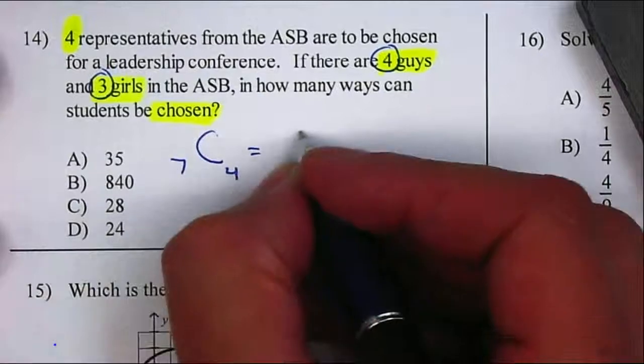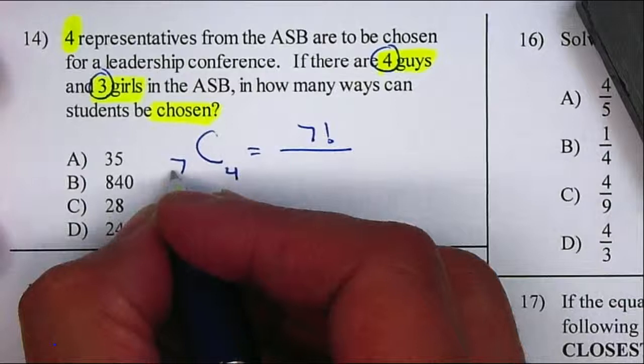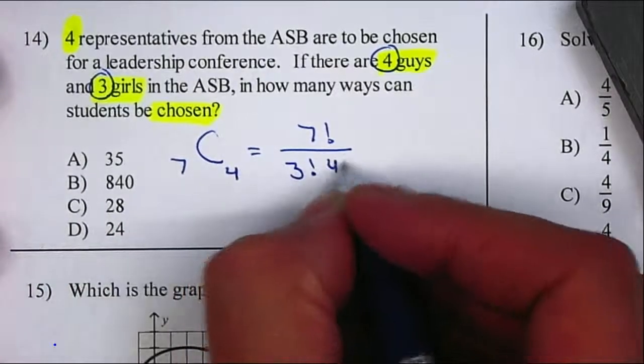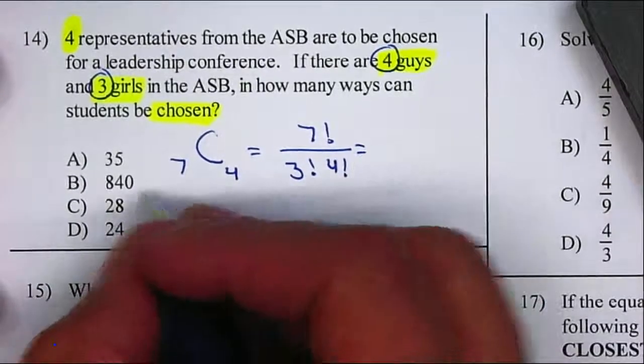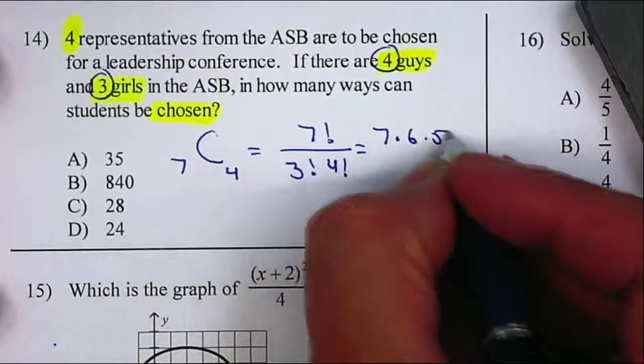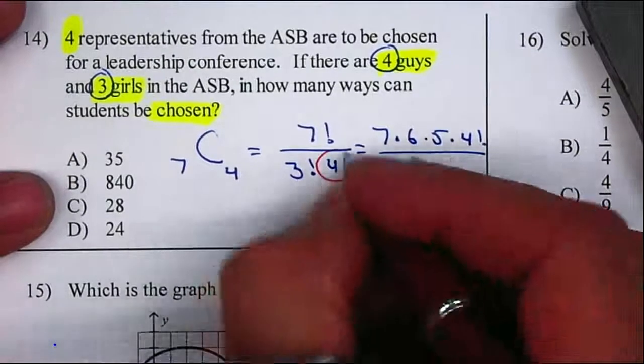So therefore, we have simplified this. Gives you seven factorial. Then you subtract. Seven minus four will give you three factorial, multiplied by four factorial. From here, I'm going to expand my seven factorial. Seven times six times five. Four factorial will cancel with my four factorial.